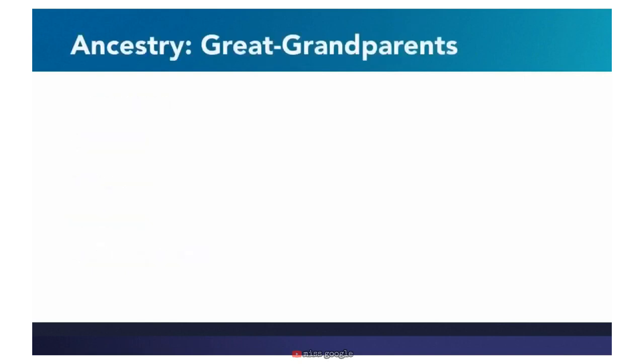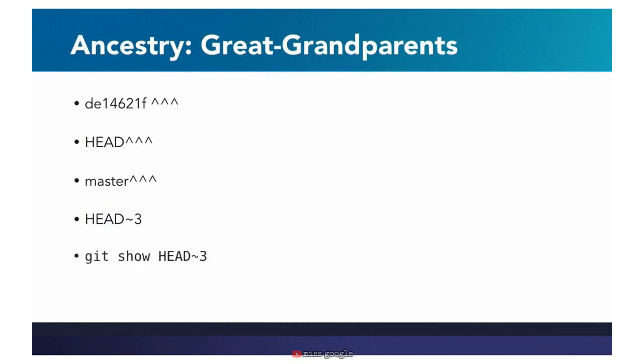If you want to go back to the great-grandparent, you add another caret, so you would have three carets. Now here's where the tilde format starts to be useful: instead of typing all those carets, it's shorter to type the tilde. So it's more common for developers to use git show head~3 than to type all those carets. And you can keep going back as far as you need — just add more carets or increase the number after the tilde.